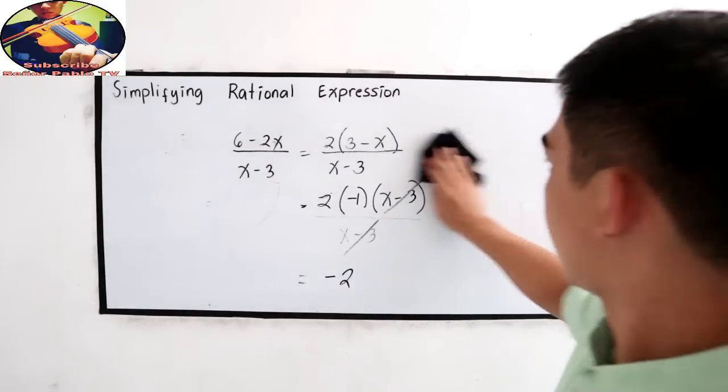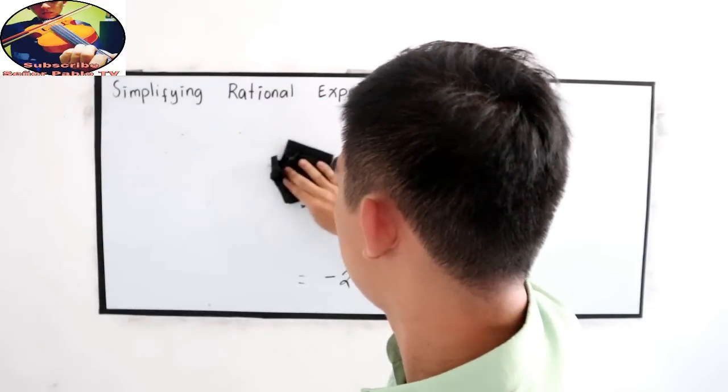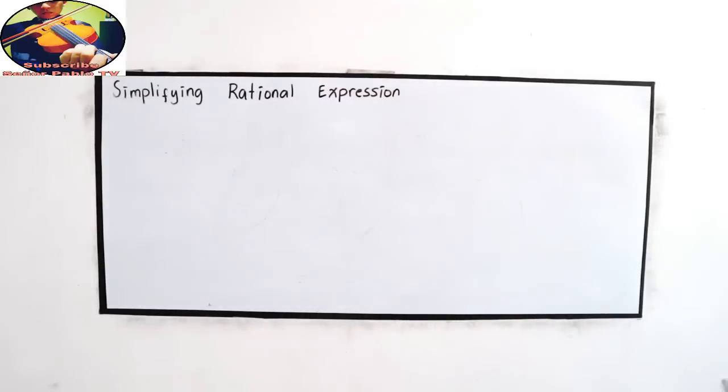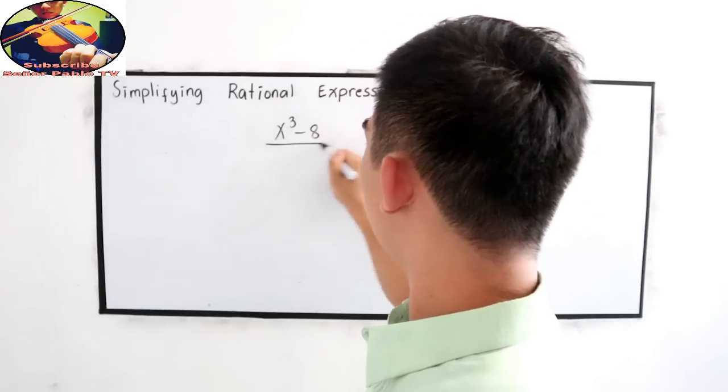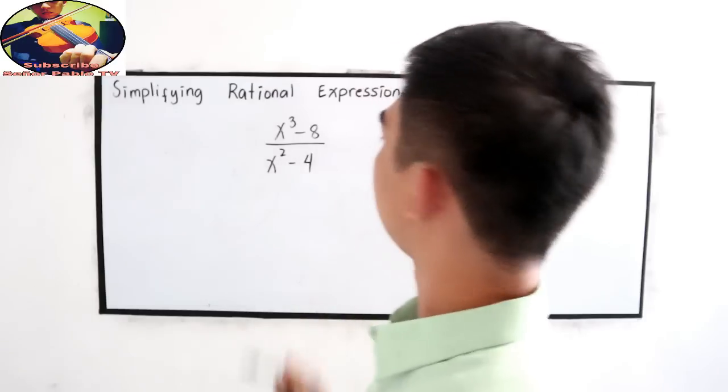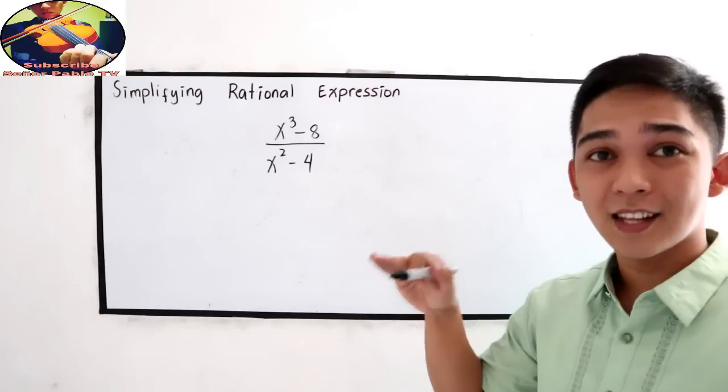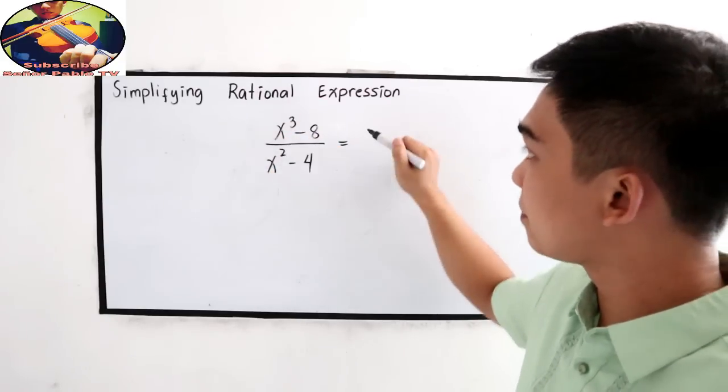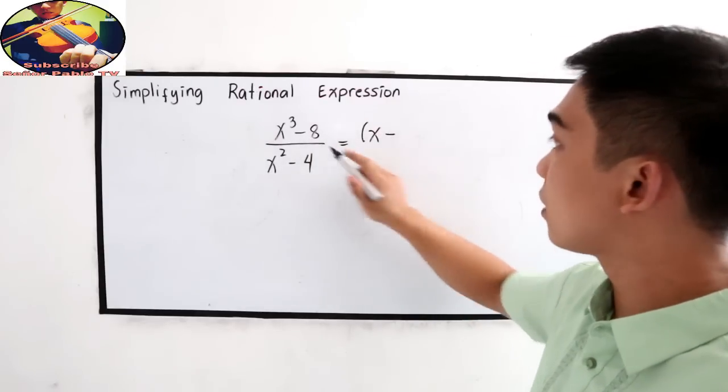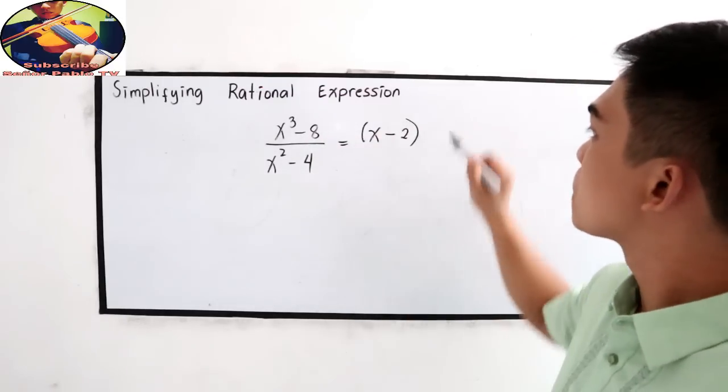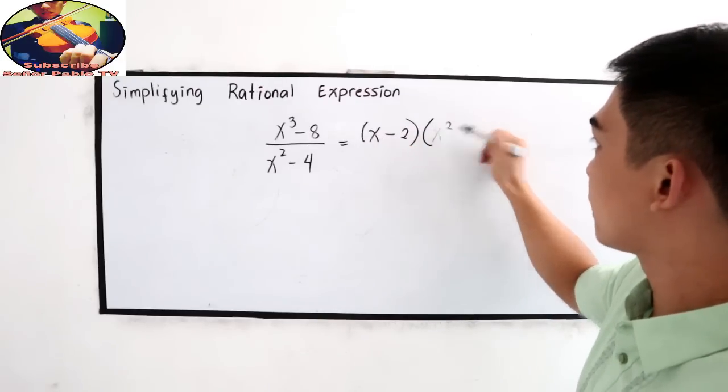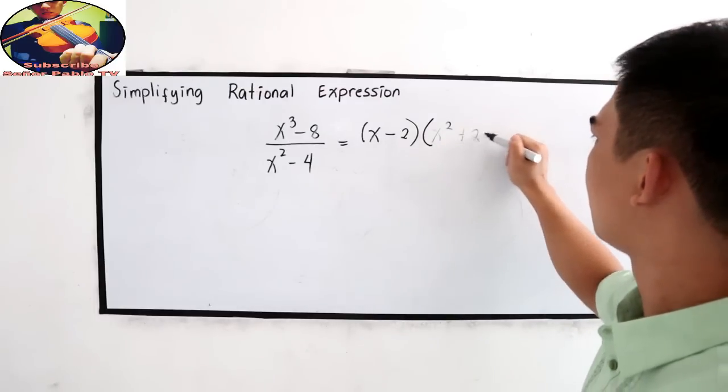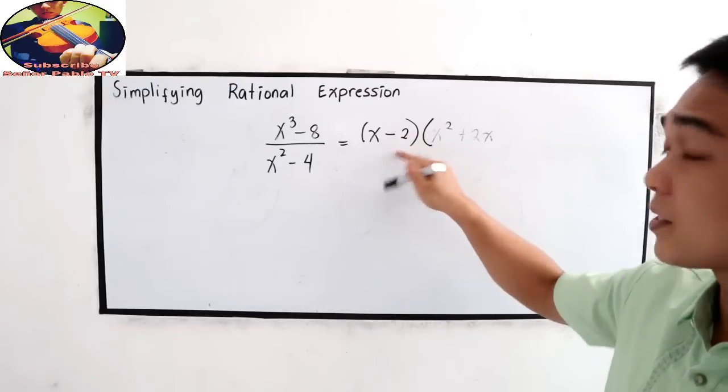Number four. Let's try x cubed minus 8 all over x squared minus 4. Factor the numerator and the denominator. Our numerator, difference of two cubes. Cube root of the first term, that is x, copy the sign, minus cube root of 8, which is 2. Focus on our trinomial. Square the first term, that is x squared. Multiply the first and the second, x times negative 2, change sign to positive 2x. And square the second term, positive 4.